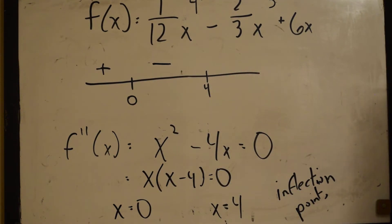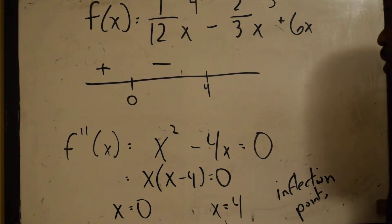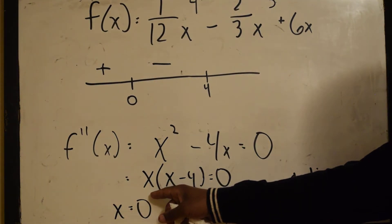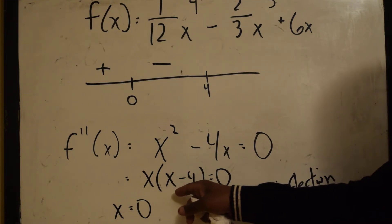And now, we plug in any number that is greater than 4. These are our test values. Let's just use 5. Remember, if you use 5, 6, 10, 20, the results will be the same. 5, which is positive, times 5 minus 4. 5 times 1.